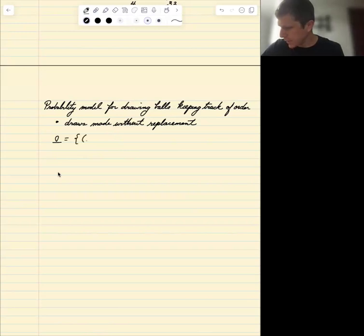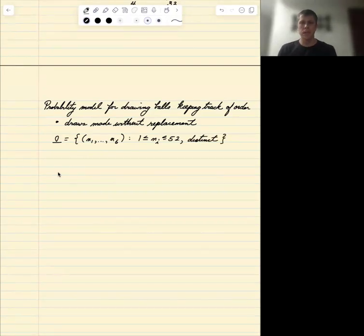Sample space is ordered tuples of size six, so we keep track of the order. Each one between one and 52, distinct. They're all different. They have to be different because when we pick one ball out we don't put it back in when we pick the next one.